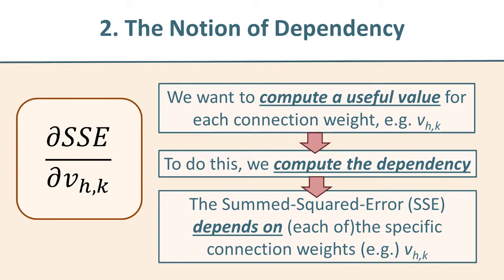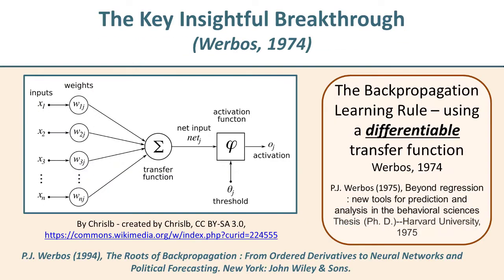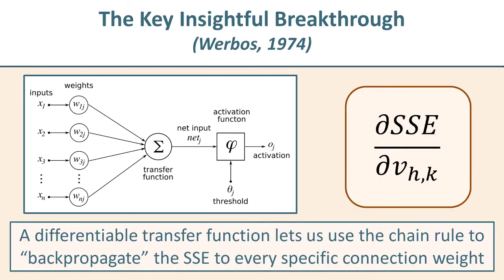That is, we were going to take the partial derivative of the sum squared error, that's SSE, with respect to a specific connection weight. The key insight that we obtained in that last video was that we needed to introduce a differentiable transfer function into computing the outputs of our neural network process.